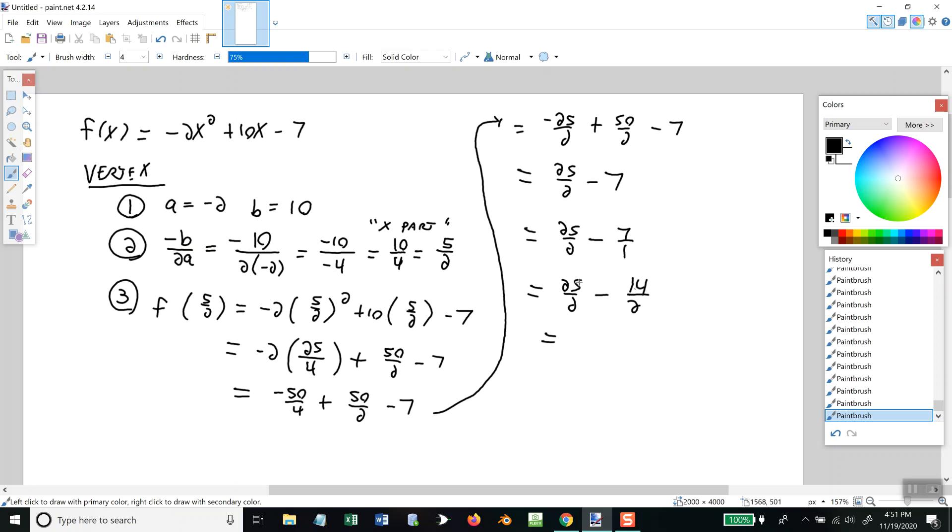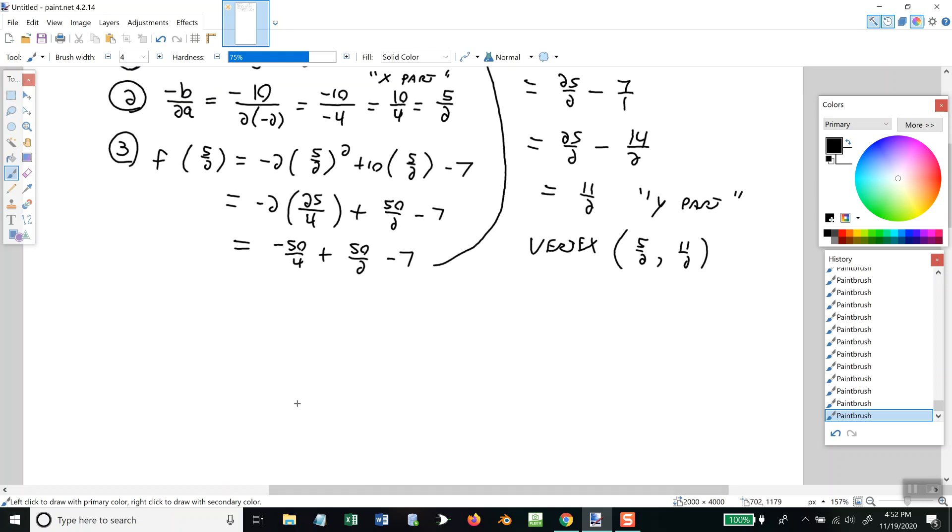Now, since I have the same denominator, I can add or subtract top parts. So, 25 - 14 is 11, so that's 11/2. And this is the Y part of our vertex. So, our vertex is, what was the X? 5/2 and 11/2. Now, in all honesty, for graphing purposes, it's probably a little bit easier to put those in decimal form. 5/2 is 2.5, and 11/2 is 5.5.